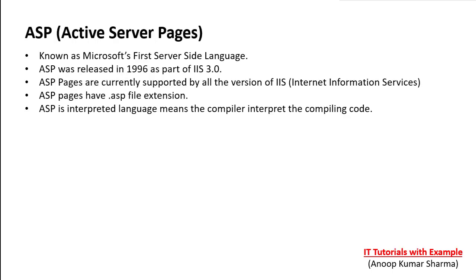Active Server Pages is known as Microsoft's first server-side language. ASP was released in 1996 as a part of IIS 3.0. ASP pages are currently supported by all versions of IIS and have the .ASP file extension.